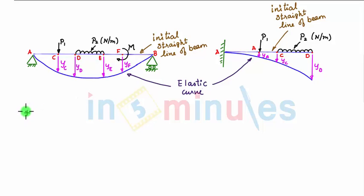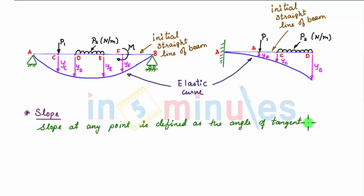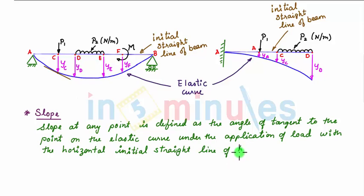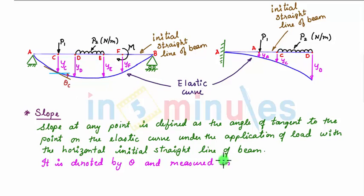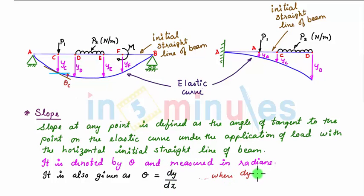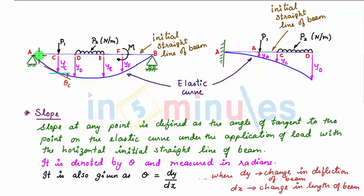Next we define slope at a point in beams. Slope at any point is defined as the angle of the tangent to that point on the elastic curve with the initial straight line of the beam under the application of load. At point C, the tangent to the elastic curve forms an angle with the initial horizontal line of the beam; this angle is called the slope at that point, denoted by theta, measured in radians, and written as theta_C. Slope theta is also given as theta equals dy by dx, where dy represents the change in deflection and dx represents the change in length along the beam.